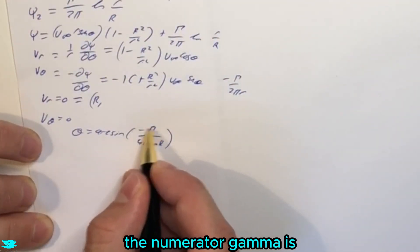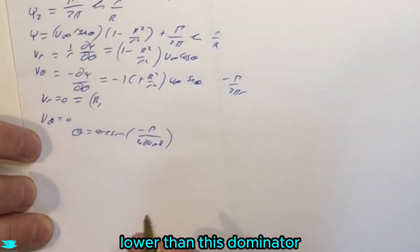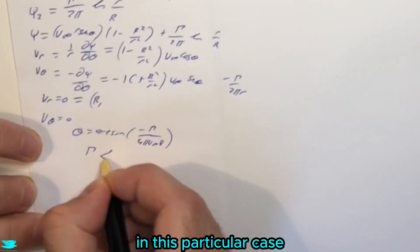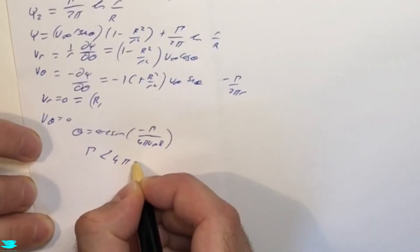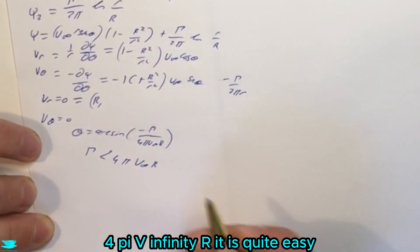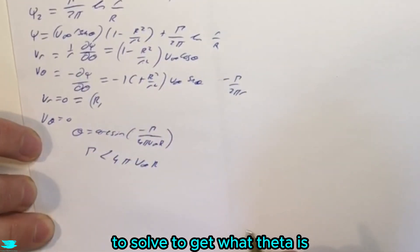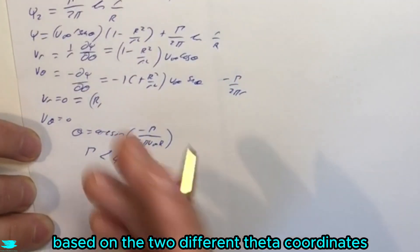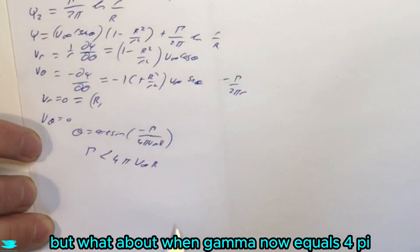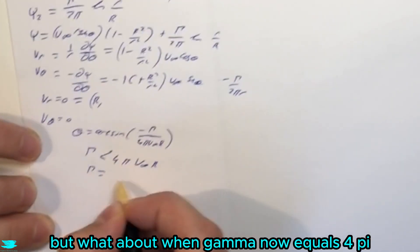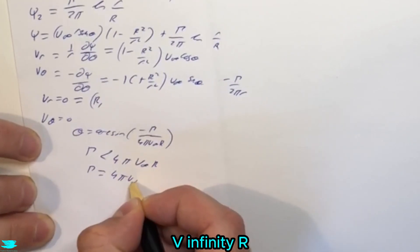So we get an imaginary situation, but let's cover first the simple situation, which is where this top, the numerator, gamma, is lower than this denominator. In this particular case, v infinity R, it is quite easy to solve to get what theta is, and we'll get these two points, based on the two different theta coordinates.